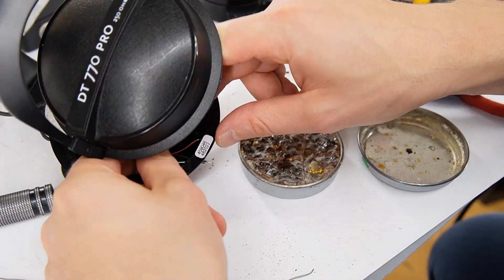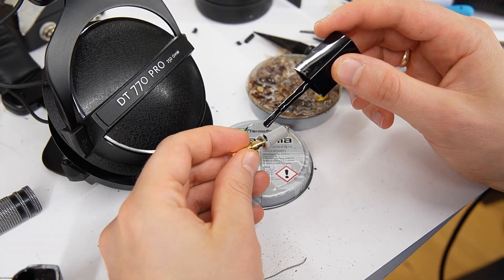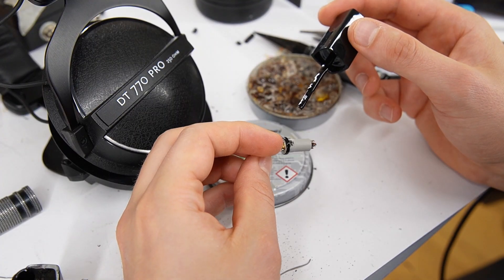Then pull the wires through the new socket hole. If you don't like the look of the socket, you can paint it with nail polish.